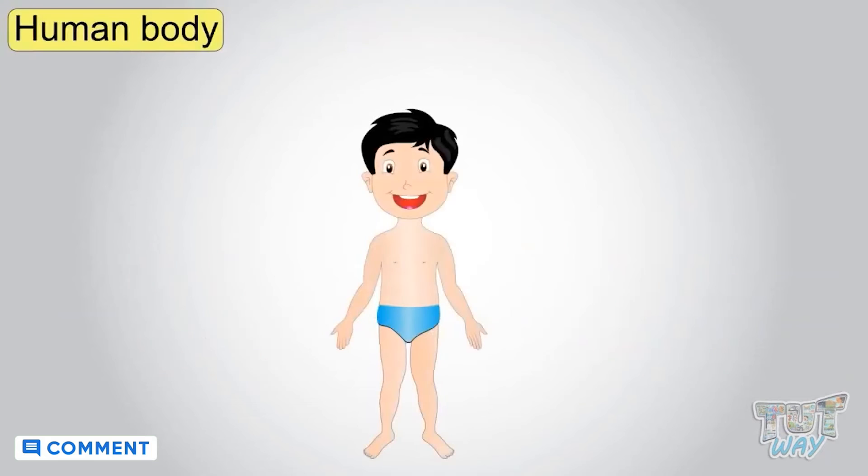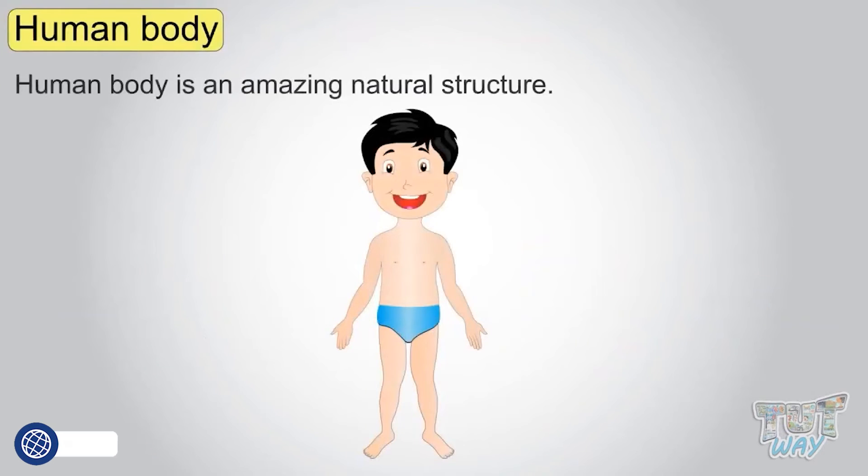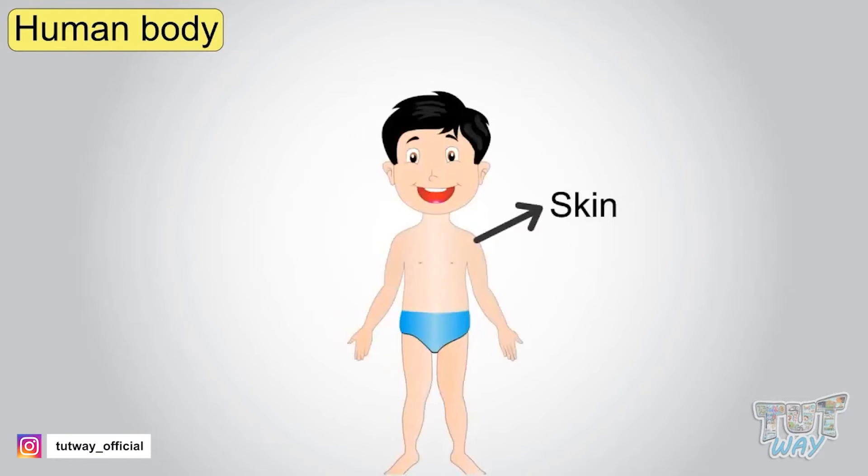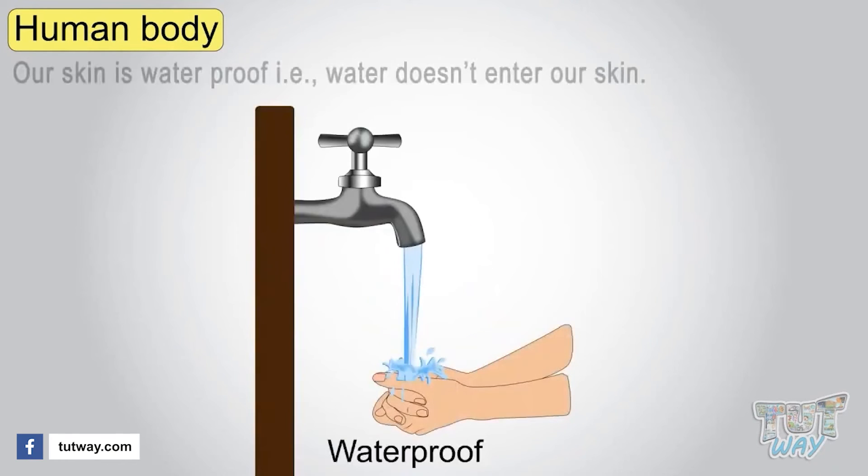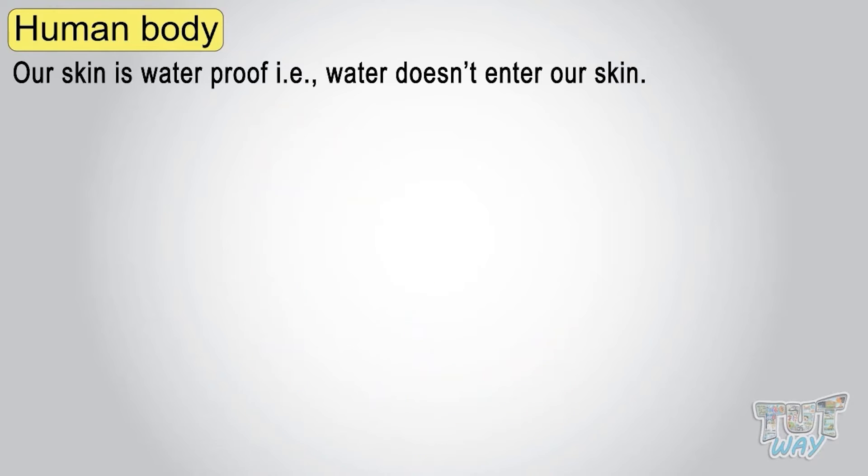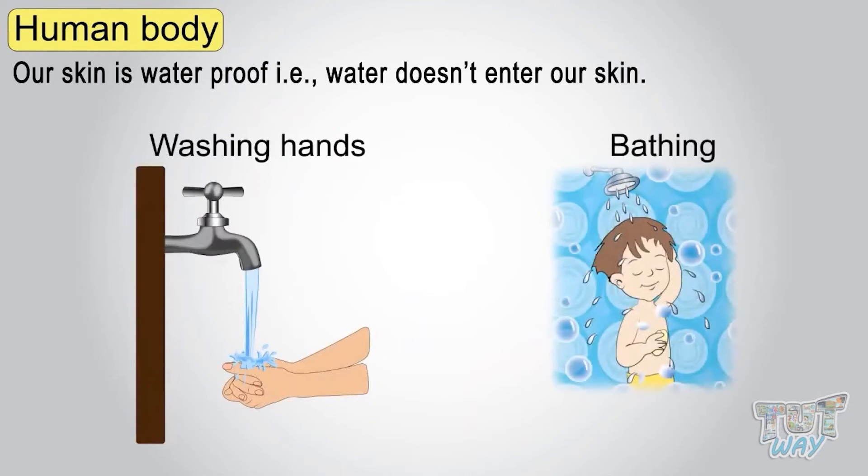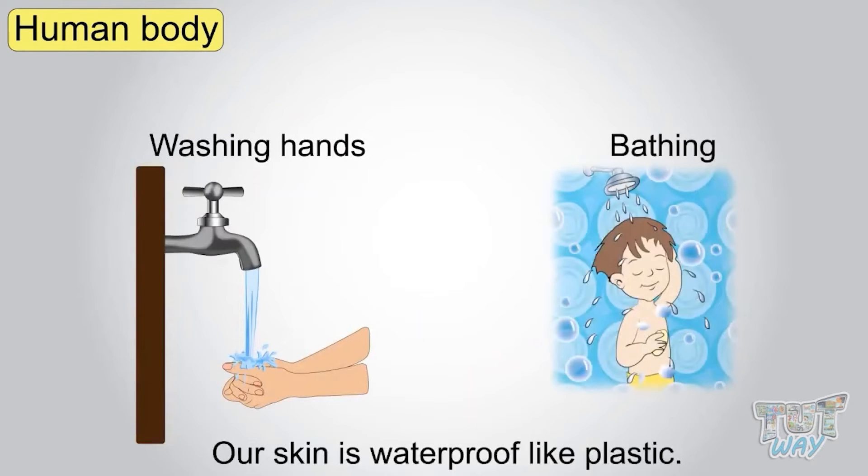Now let's learn about the human body, which is an amazing natural structure. Our skin holds together all our internal organs. Our skin is waterproof. That is, water does not enter our skin when you wash your hands or you have a bath. Our skin is waterproof like plastic.